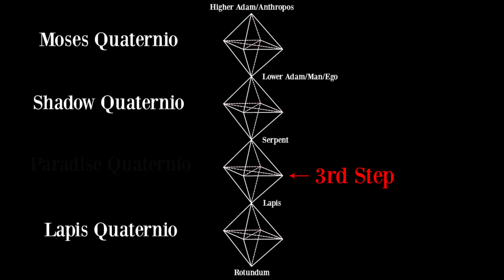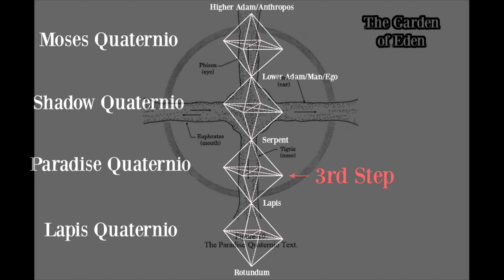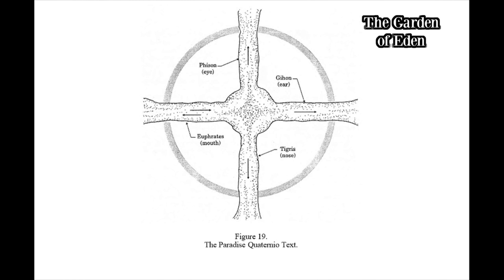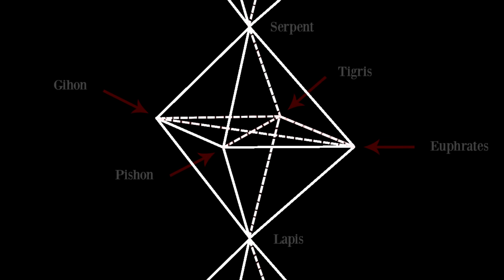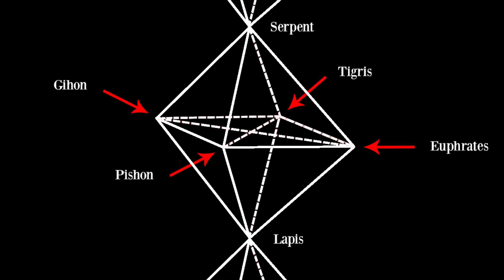The third step involves the remaining double pyramid, which is known as the Paradise Quaternio — the very same Paradise Quaternio which was discussed in Chapter 13. The four edges of this double pyramid correspond to the four rivers of Paradise, and they all flow from the same source of unity, the lapis.